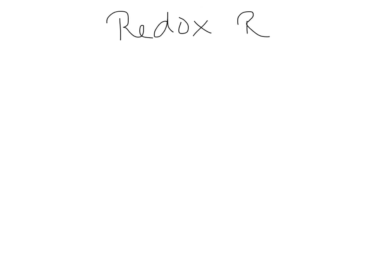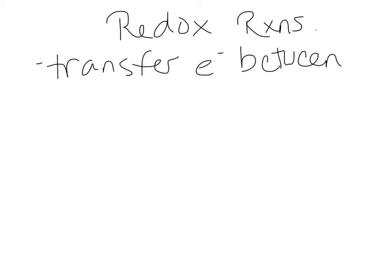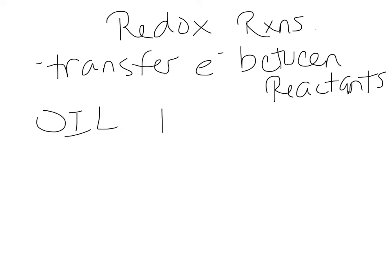Redox reactions — oxidation-reduction reactions — are used to transfer electrons between reactants. We transfer those electrons between the various reactants of a chemical reaction. In these reactions, one molecule will be oxidized and one will be reduced. The way to remember what causes what is the acronym OIL RIG.